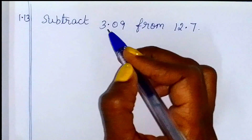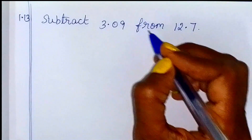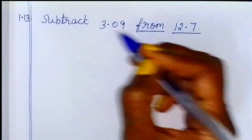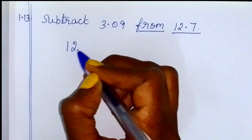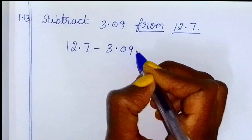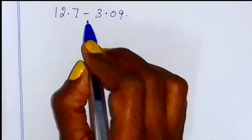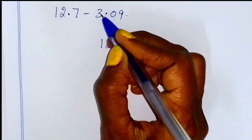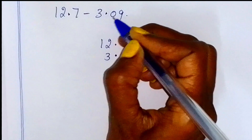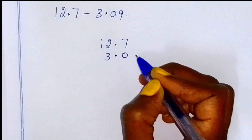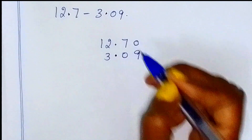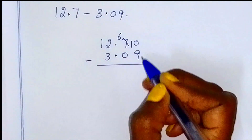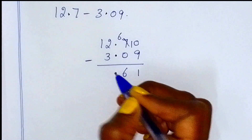Example 1.13: subtract from 12.7. Subtract — decimal point. We need to borrow. After borrowing and subtracting, decimal point is straight. The digits become 9 after borrowing. Decimal point — 2, 3, 9 — this is the answer.